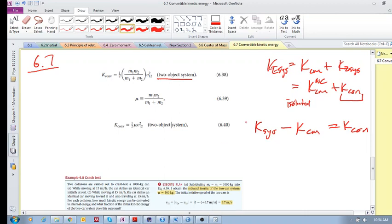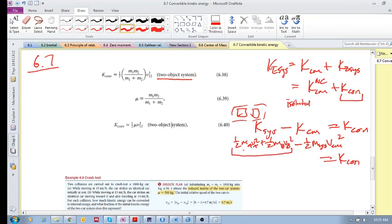If I've got two objects in my system interacting, I would say half m_a v_a squared plus half m_b v_b squared, or half m_1 v_1, you get the idea, minus half m of the system velocity of the center of mass squared equals my convertible kinetic energy. So I calculate the kinetic energy of my system, subtract the kinetic energy of the center of mass, and I can calculate the convertible kinetic energy.